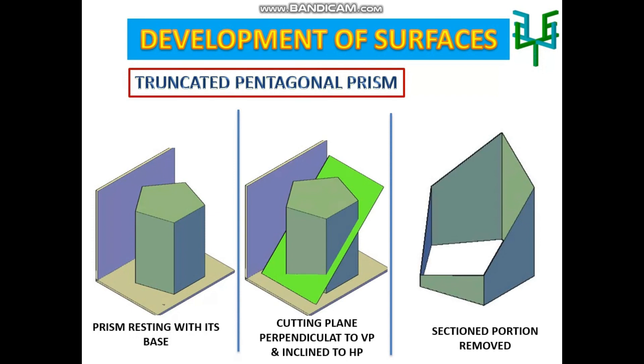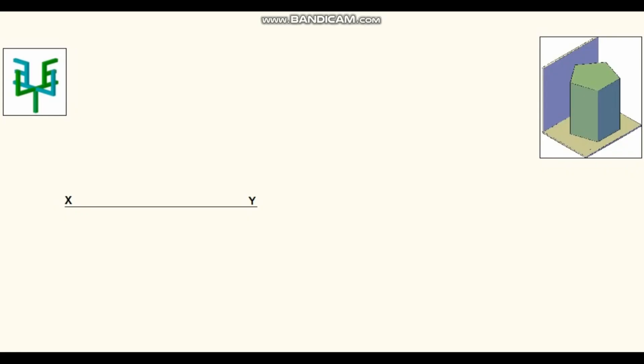Draw the XY line first. Draw one side of pentagon parallel to the XY line. At the same time this side should be away from the XY line. Construct a pentagon based on this parallel edge.